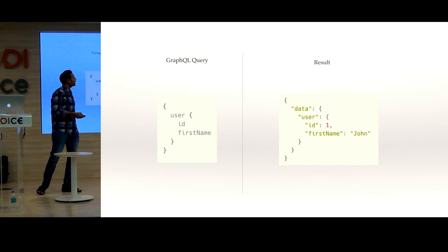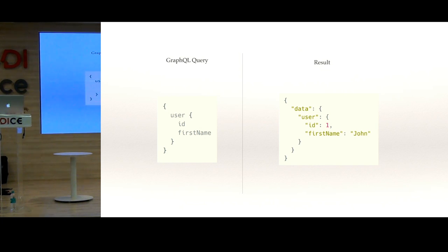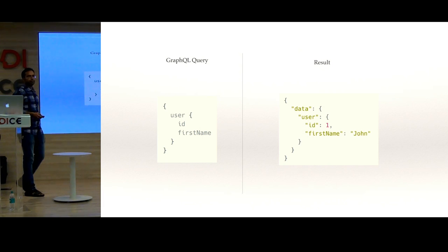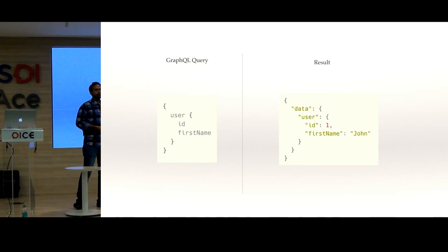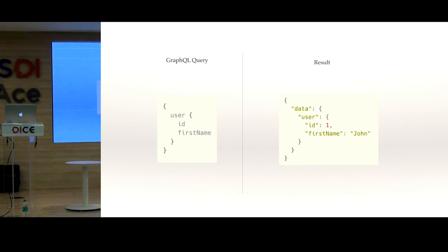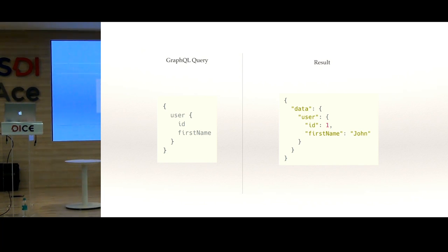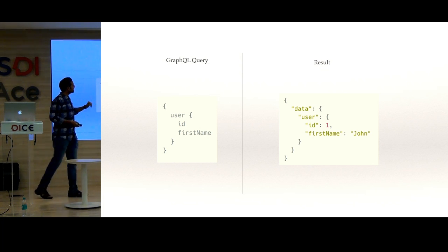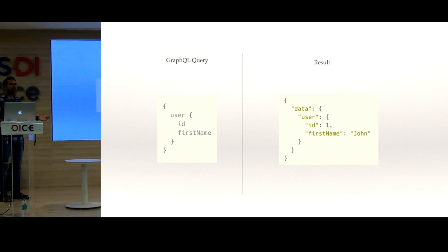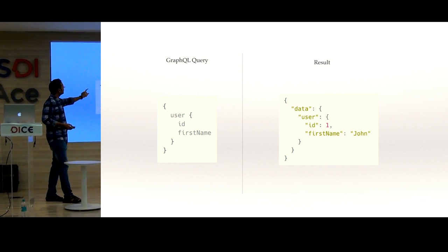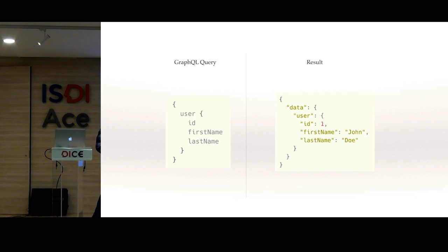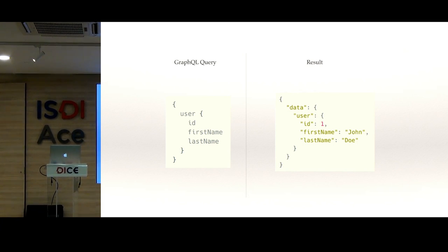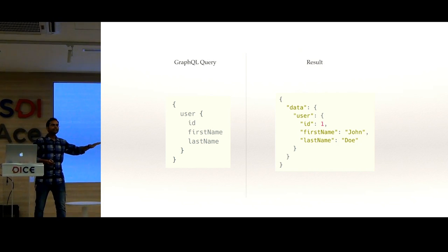You can see some examples of queries. On the left, you can see a GraphQL query where we say we need a user, and we specify we want id and first name. This is the query the client sends, and our GraphQL server responds with JSON data containing just id and first name. The user might have many more fields, but in the response we only get id and first name because that's what the client asked for.